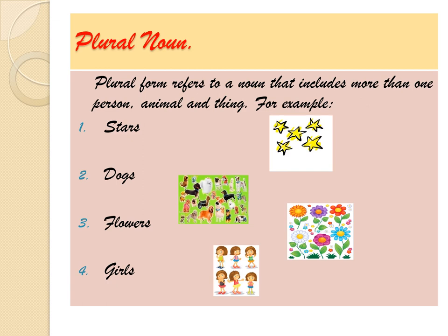Plural noun. Plural means many — more than one. Like two pencils, two chairs, two apples, two boys, etc. The plural form refers to a noun that includes more than one person, animal, or thing. For example: stars, dogs, flowers, and girls.